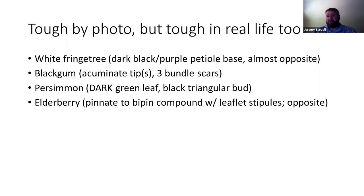Black gum is slightly obovate — slightly wider out by the apex but close to elliptical — with an acuminate tip at the end. That distinguishes it from persimmon, which just has an acute tip. Sometimes black gum throws on extra acuminate tips on the apical half of the leaf — if you see that, it's a dead giveaway. Black gum is hard to identify; look for three dots inside an oval or kidney-bean shaped bundle trace scars within the leaf scar.